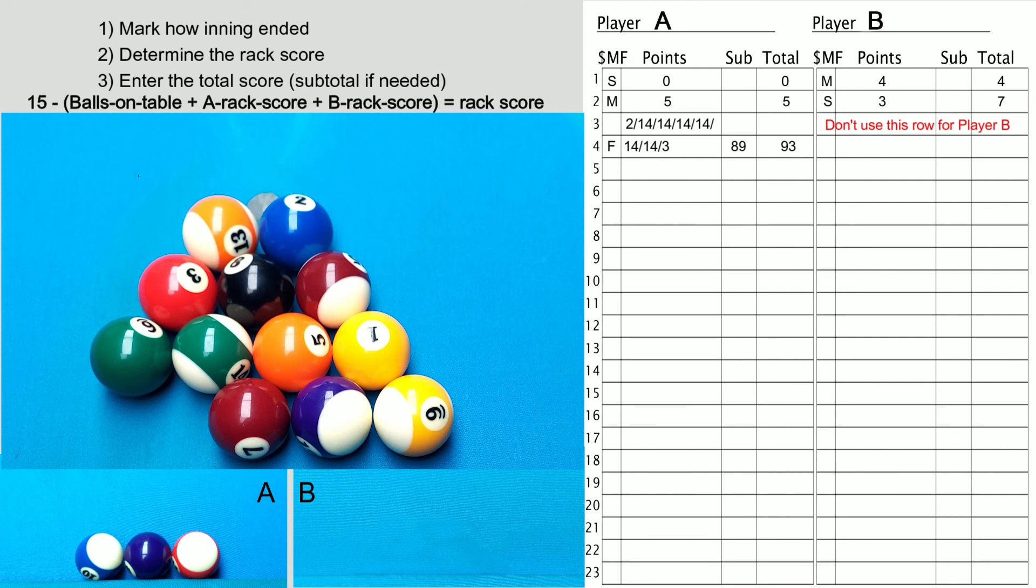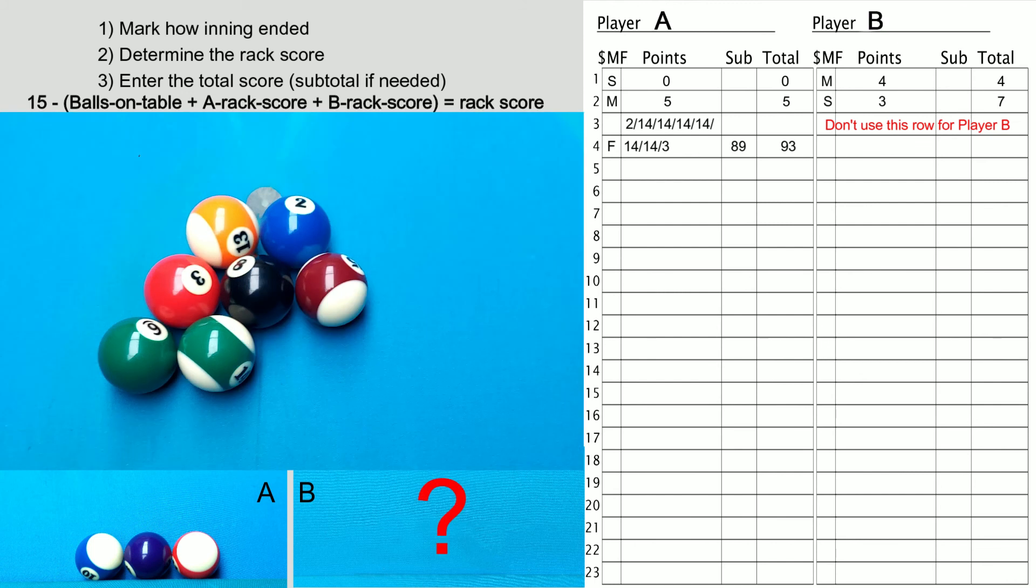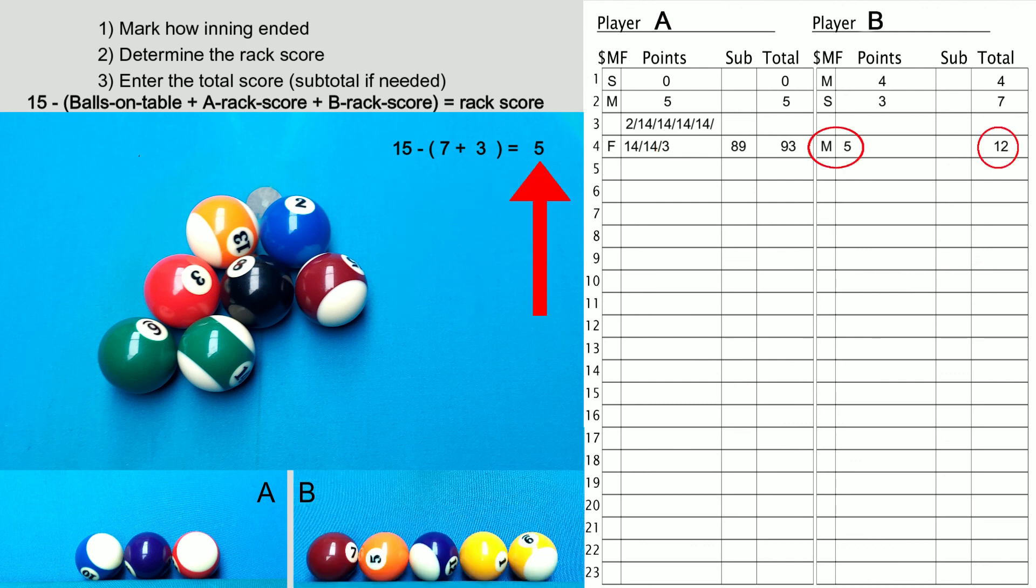It'll take no time at all to become comfortable with keeping score. And you'll see just how simple it is. For example, assume you are player B here, you shoot some balls, and then you miss. You don't need to count the balls as you're shooting. The first thing you do when you miss is count the number of balls that are on the table. Add to the current rack scores, subtract from 15, and you've made five balls.